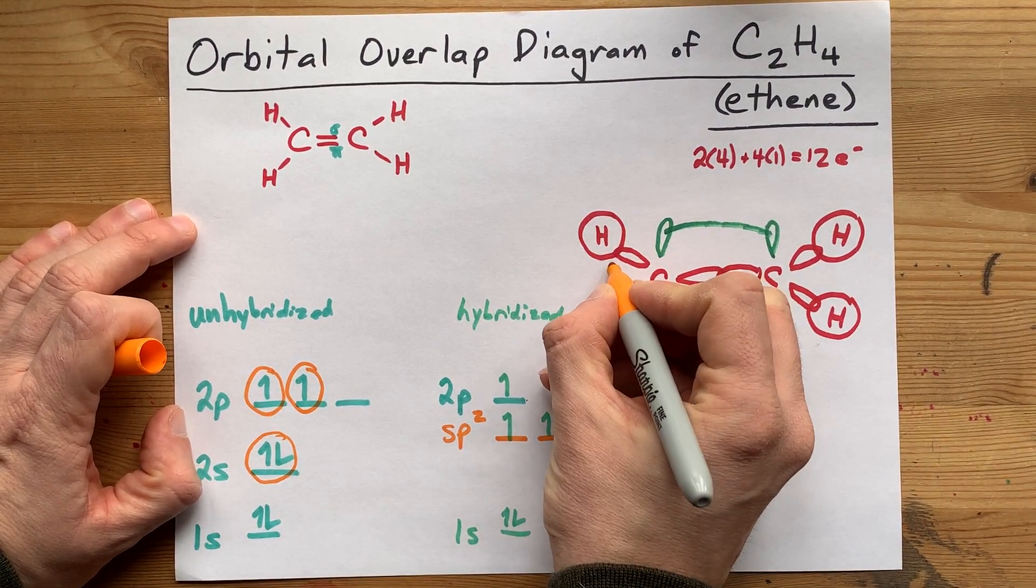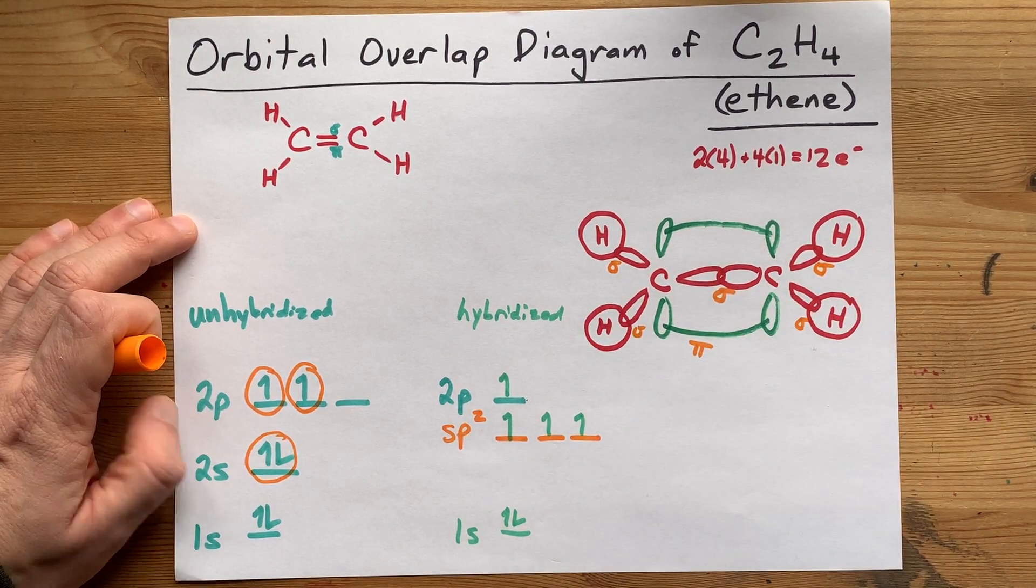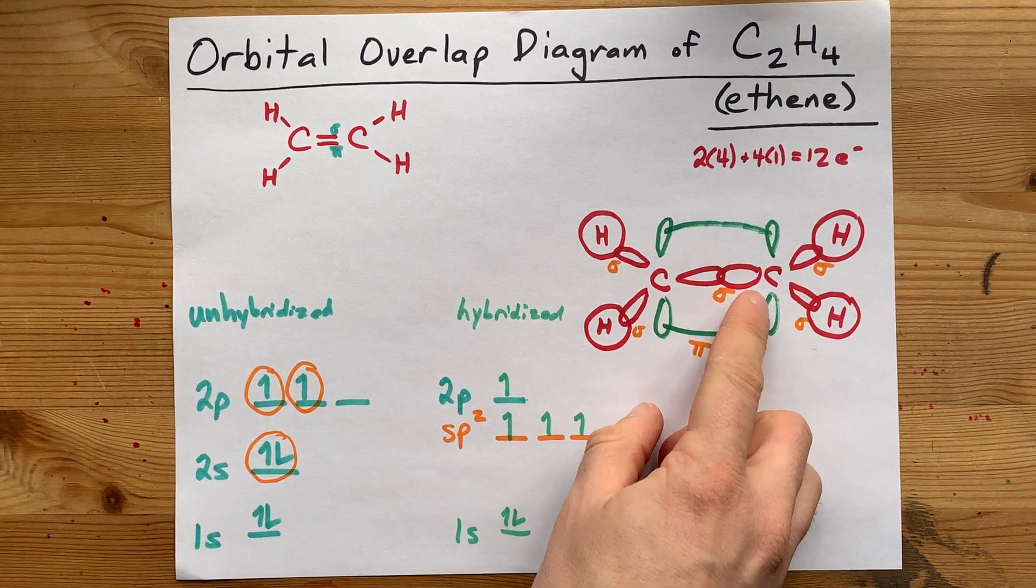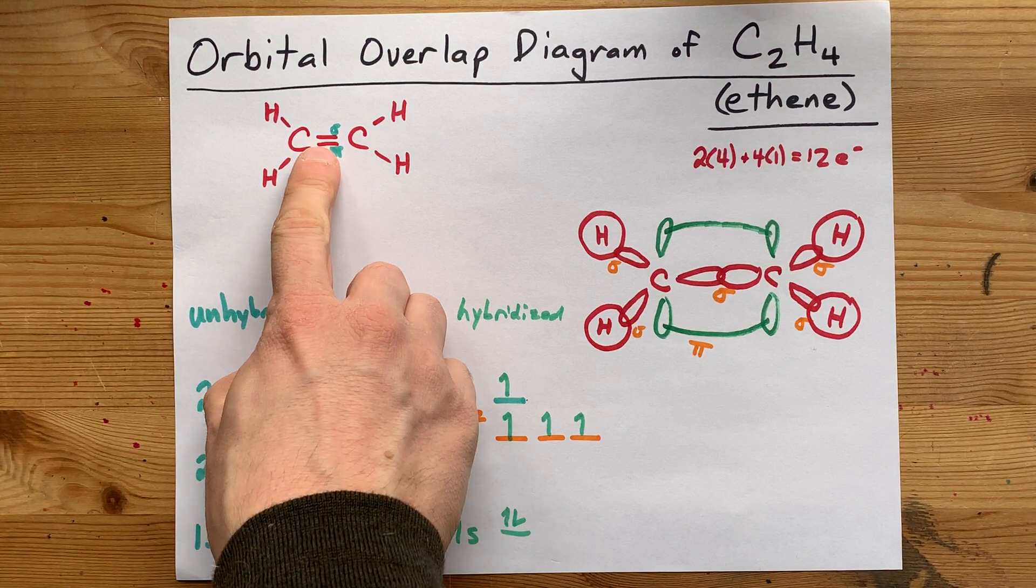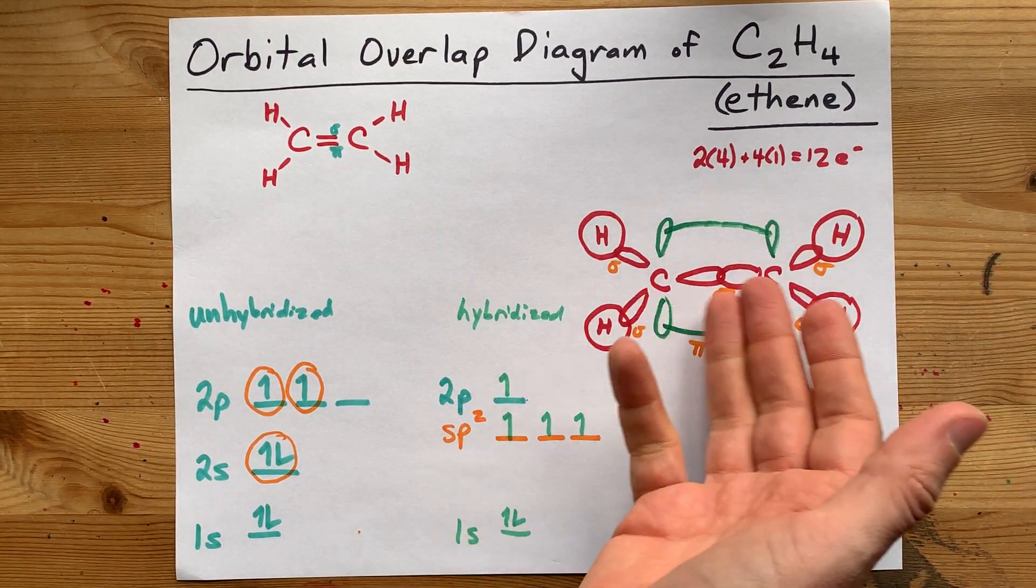Very nice. We also have a sigma bond here, sigma bond here, sigma bond here, and sigma bond here. But what mattered absolutely the most is that you can show the difference between the sigma bond, the first bond between the two carbons, and the pi bond. Very nice.